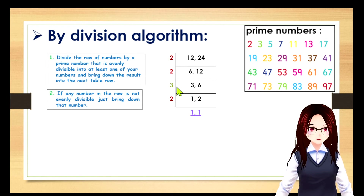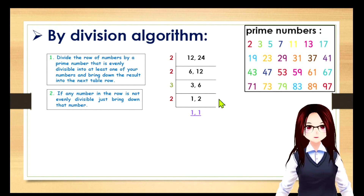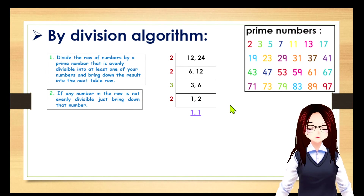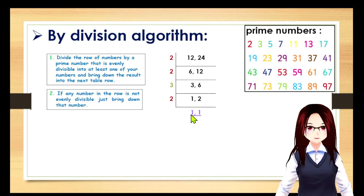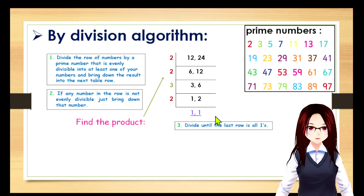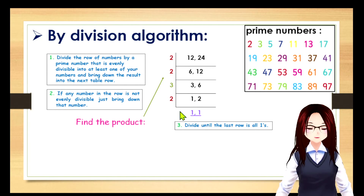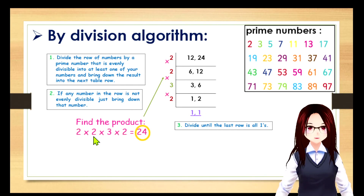Since we can't divide by 2 anymore, we divide by the next prime number. 3 divided by 3 equals 1, and 6 divided by 3 equals 2. Next, divide by 2: 1 divided by 2 — you can't, so bring down 1; and 2 divided by 2 equals 1. Now all rows are 1s, so find the product: 2 × 2 × 3 × 2 = 24. This is your LCM.